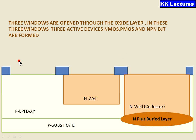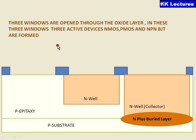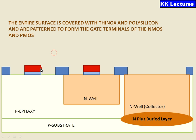Again, one more window is opened which is used to form your NMOS. Three windows are opened throughout the oxide layer. In these three windows, three active devices — NMOS, PMOS, and NPN-BJT — are formed.